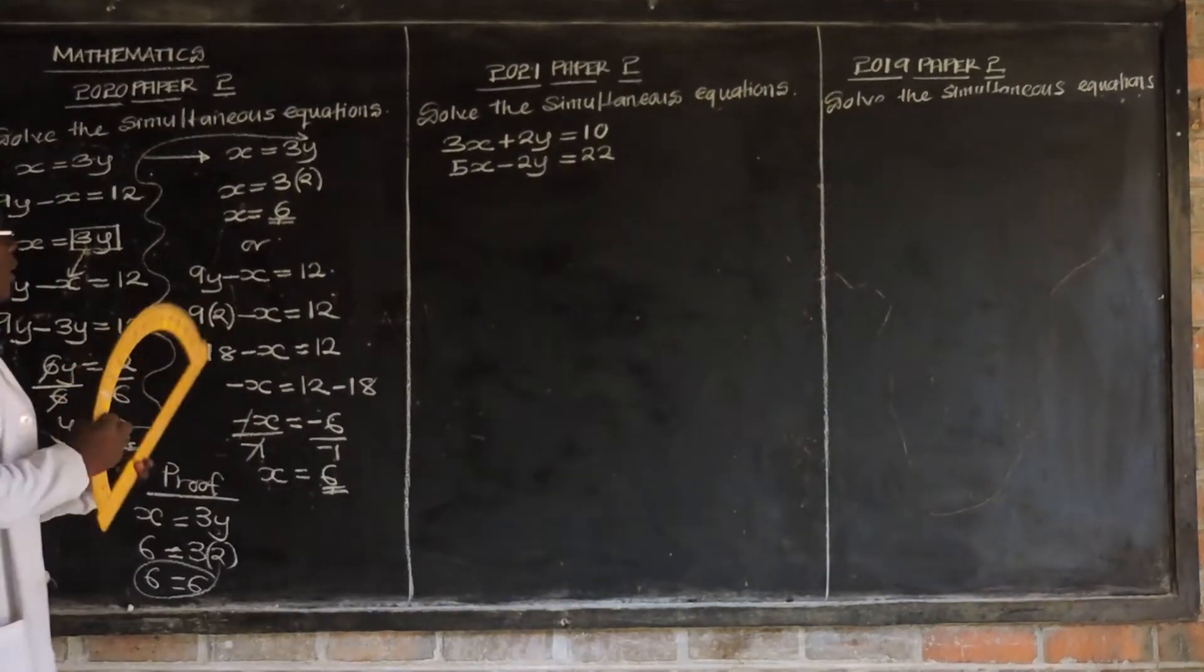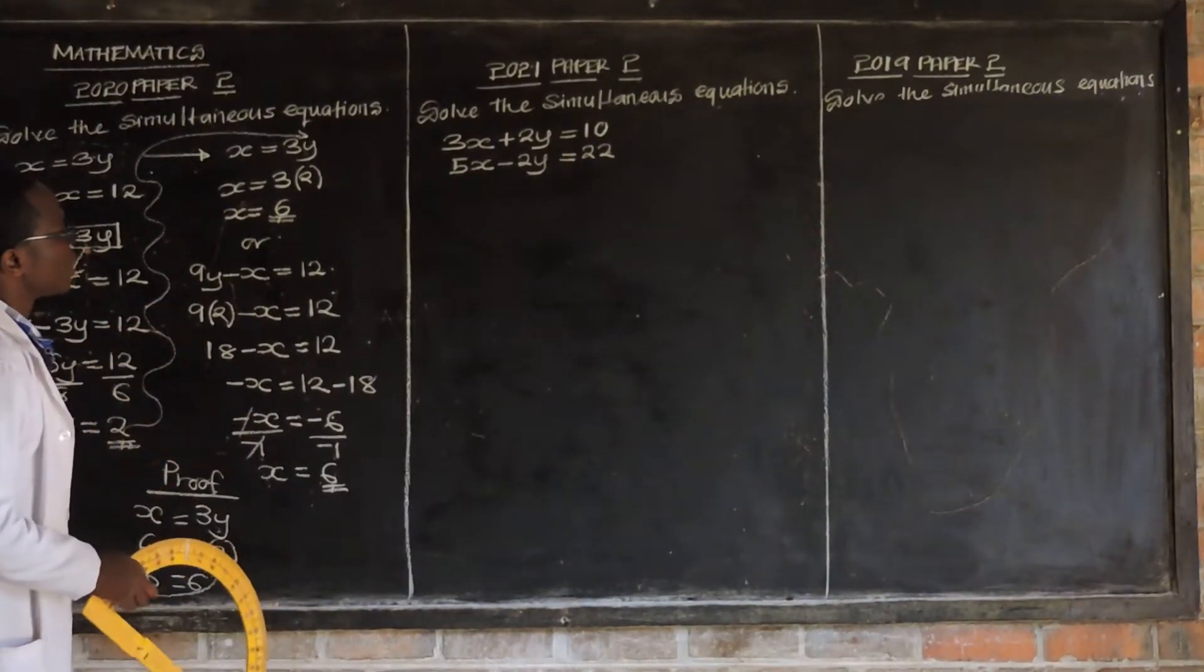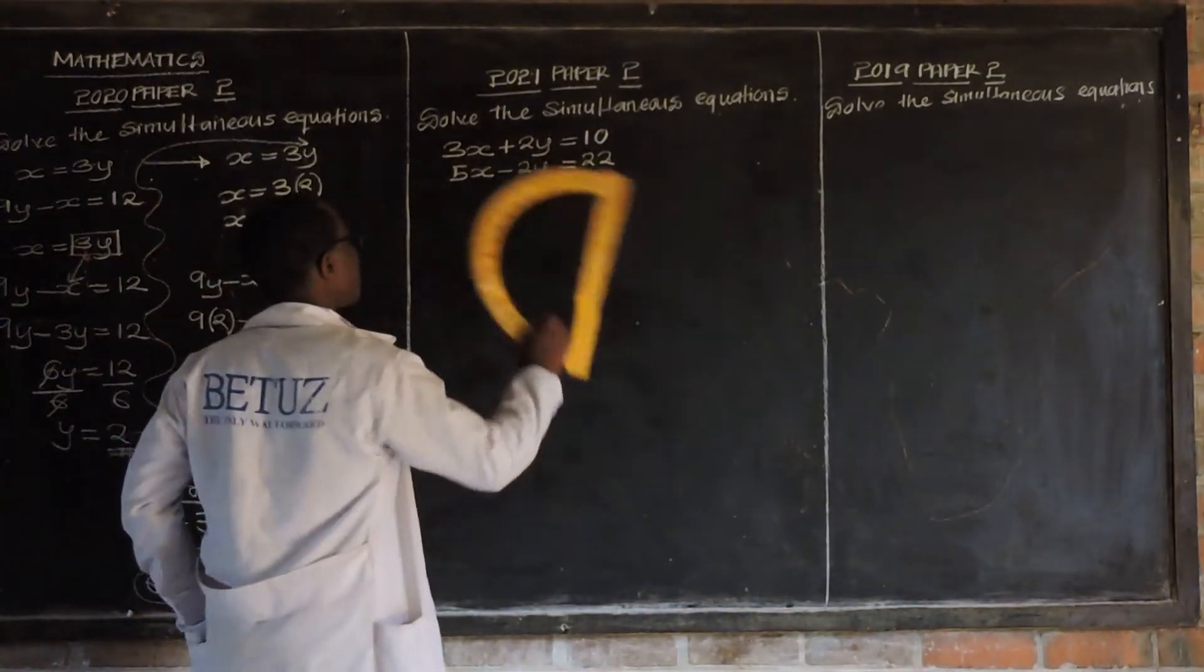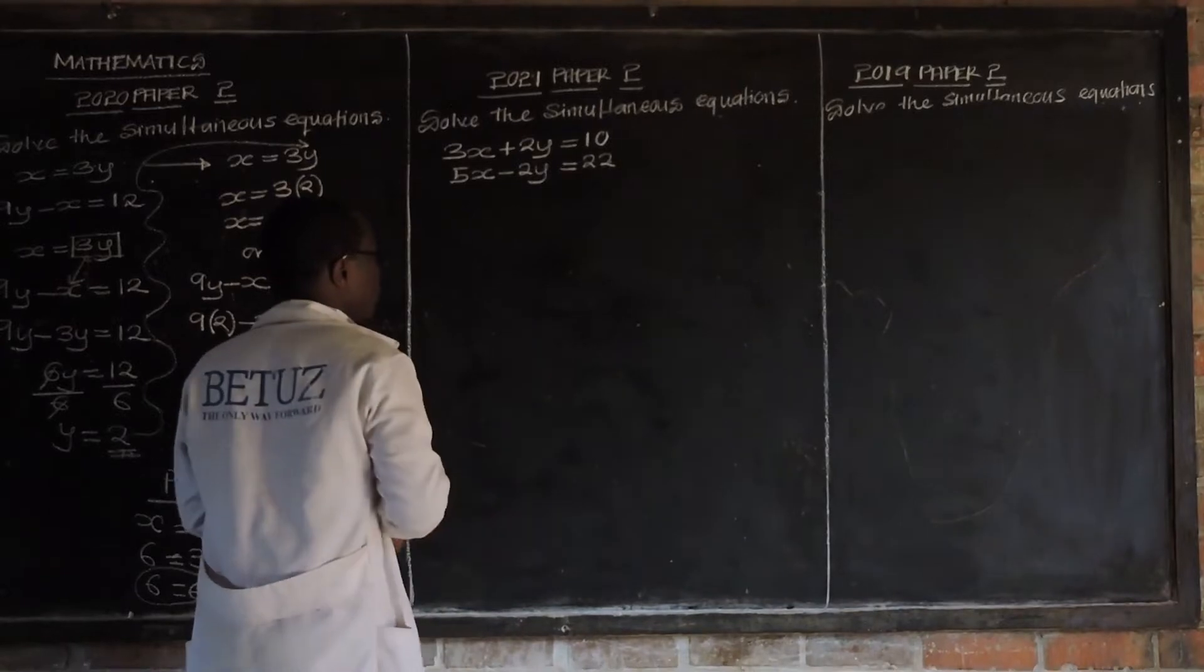So, it's saying this is 2021 paper 2. It's saying solve the simultaneous equations. We have these two equations.